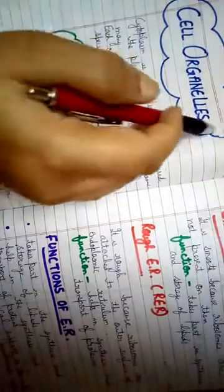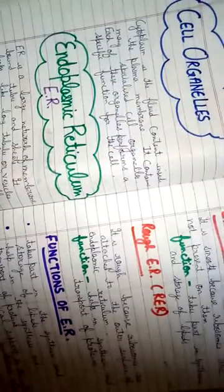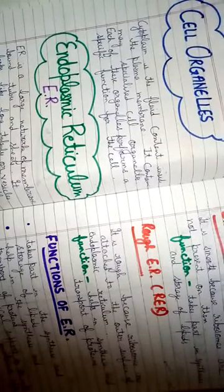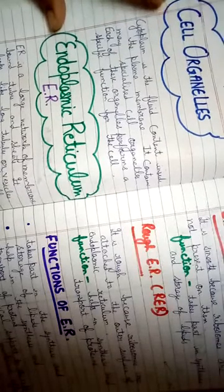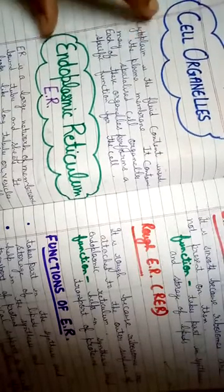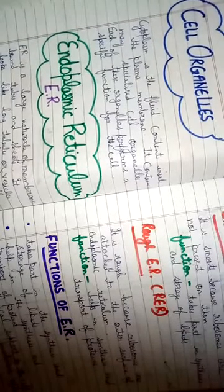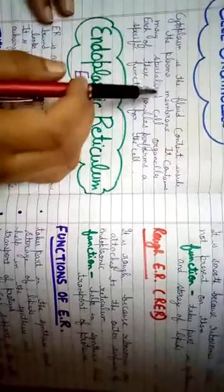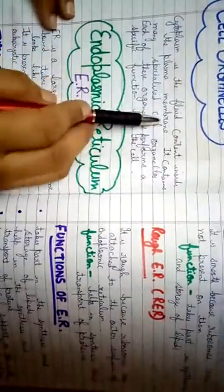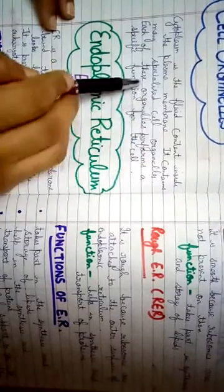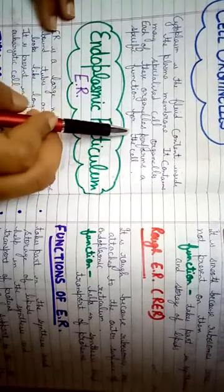We will discuss about cell organelles. Just like our body has different organs, the cell also has different small organs which we call cell organelles. These cell organelles perform all the activities or functions of the cell. Cytoplasm is the fluid content inside the plasma membrane and it contains many specialized cell organelles, each performing a specific function.